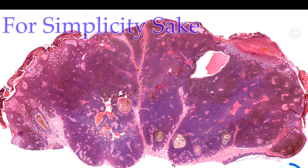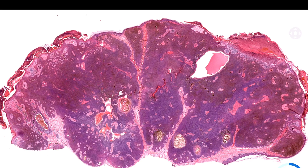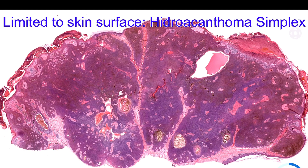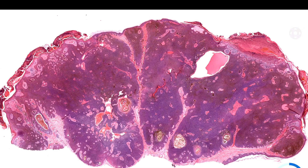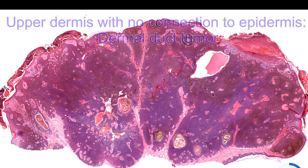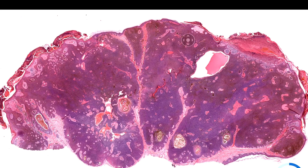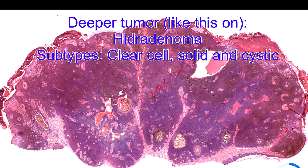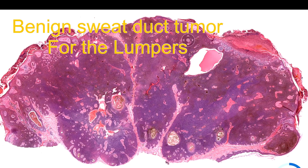We're going to touch briefly into the different subtypes and why people decided to name them differently. They are all the same cells that make up these additional subtypes. The main difference is where the lesional cells are located within the skin. When it's limited to the epidermis, people call that hidroacanthoma simplex. A little bit deeper in the upper dermis with small nested things, we call that a dermal duct tumor. Further down you have the poroma, then you have the hidradenoma solid and cystic type. But calling it benign sweat duct tumor would be perfectly fine.